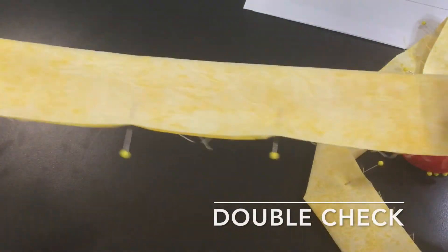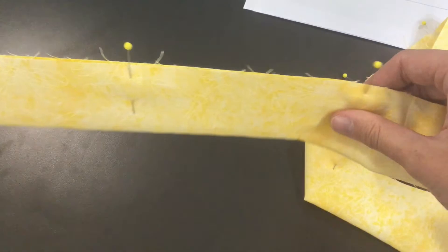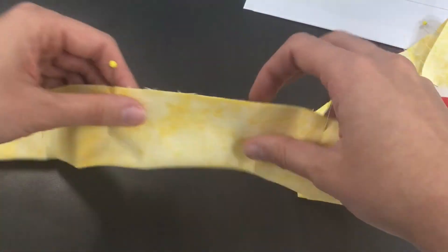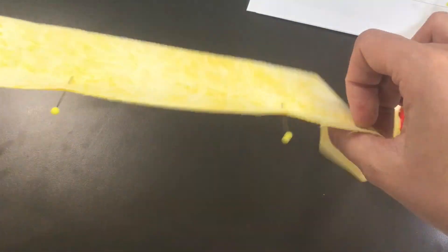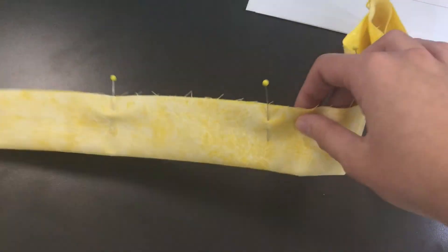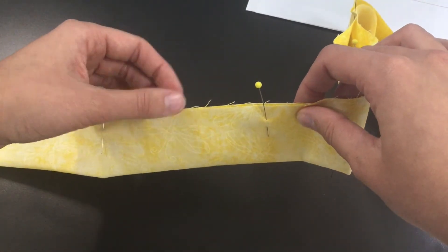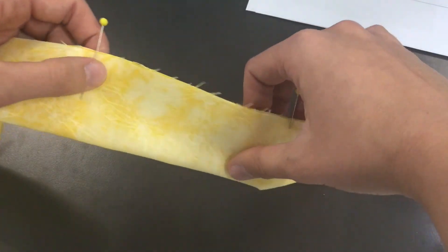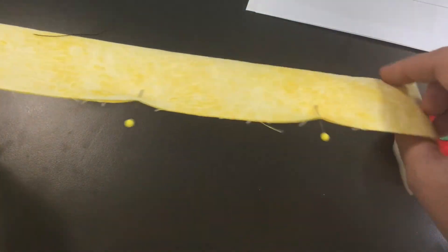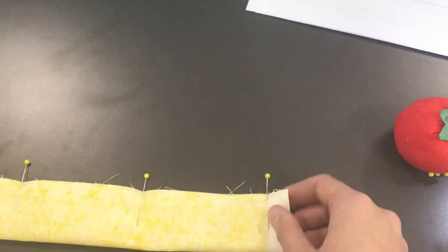Once you're done, double check. Look down the whole length of your fabric. Make sure the entire raw edge—by the way, raw edge is this bit that frays—make sure that whole edge lines up good the whole way down. If it does, you've successfully completed step one.